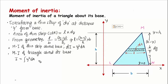The moment of inertia of the entire triangle is given by integrating the small moment of inertia: I = ∫ y² dA. The variable y ranges from 0 at the base to h at the tip, so the limits of integration are y = 0 to y = h.